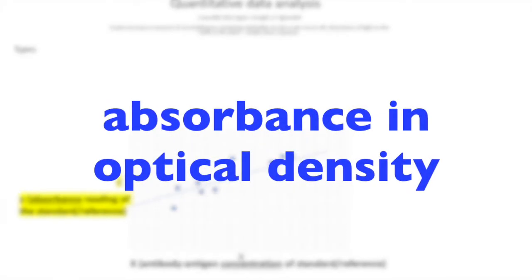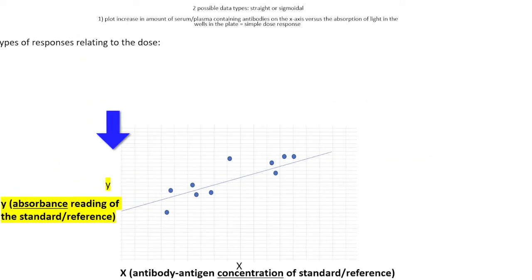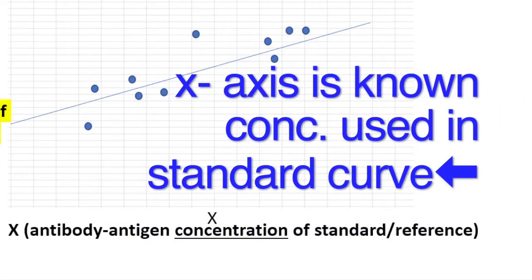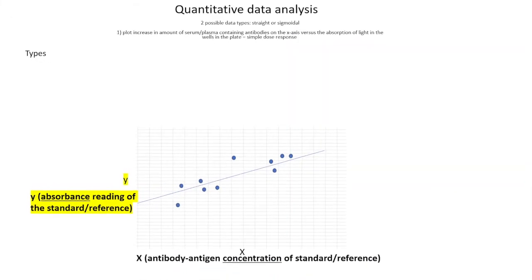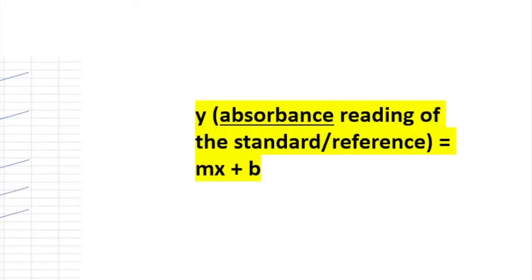In a spectrophotometer, the absorption of light through that solution depends on how much color there is. Your optical densities are the Y variable, the response. And your independent variable is the known concentration on the X axis. Then from that, you'll be able to infer the unknown concentrations. You draw a line and the equation of the line turns out to be Y equals MX plus B.